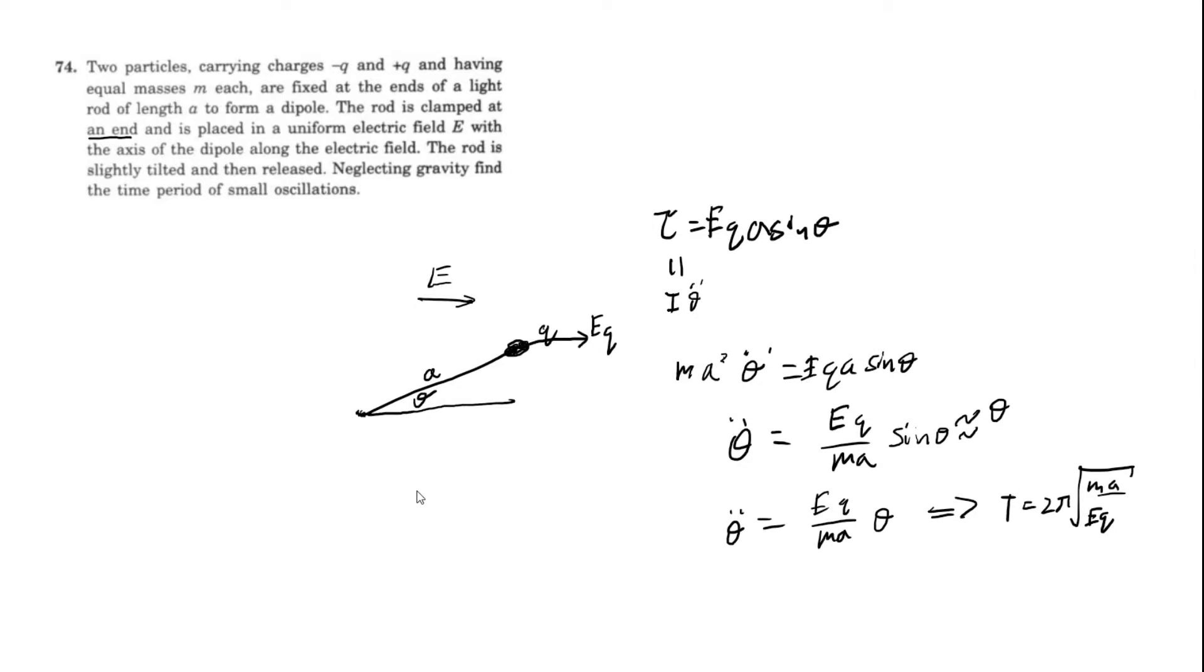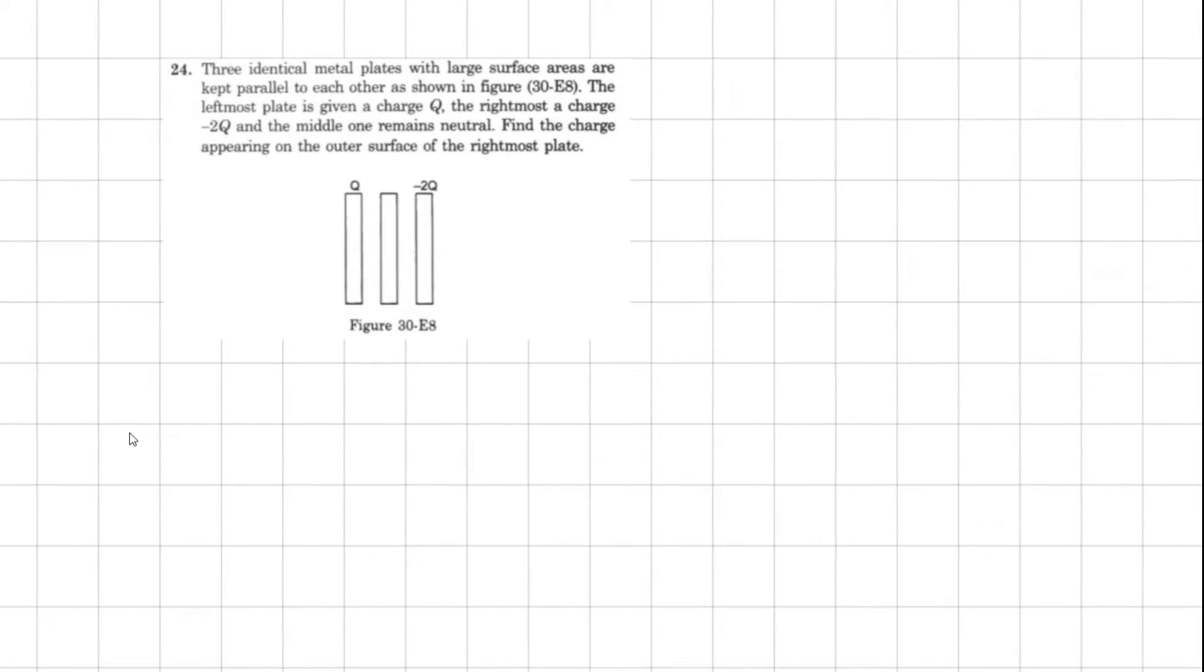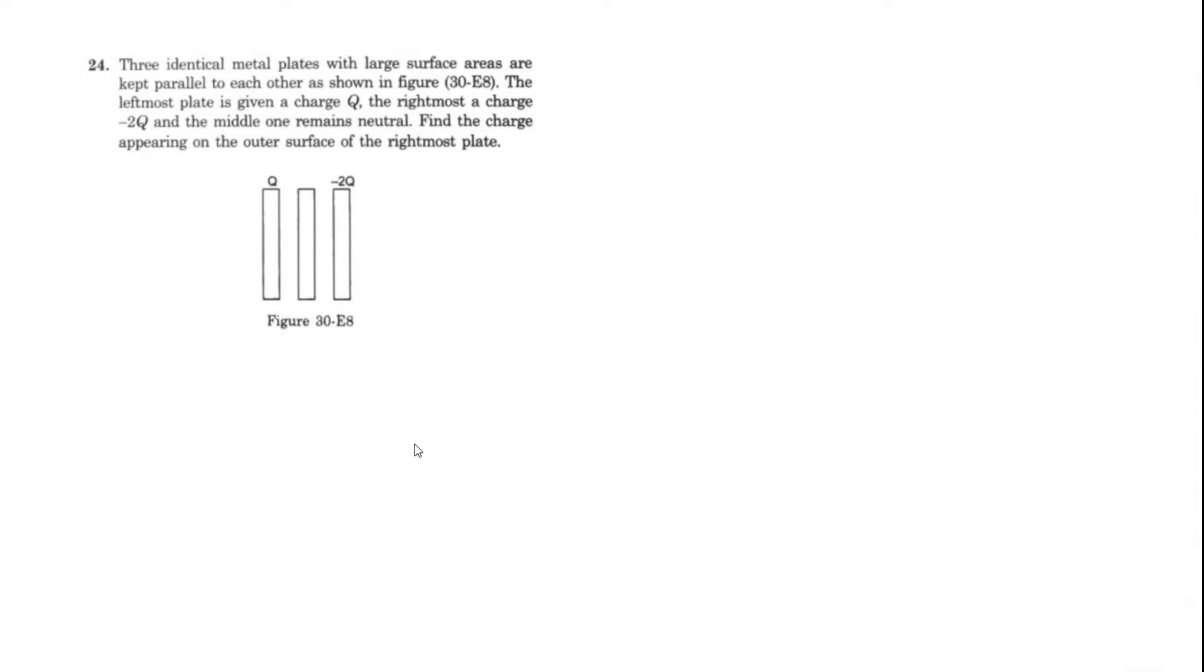I'm still kind of confused why they even introduced two charges. But okay, moving to number 24. Three identical metal plates with large surface areas are kept parallel to each other as shown in figure 30-E8. The leftmost plate is given a charge Q, the rightmost a charge negative 2Q, and the middle one remains neutral. Find the charge appearing on the outer surface of the rightmost plate.